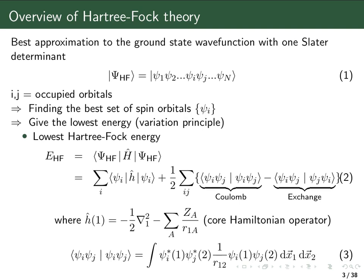The first integral has electron one described by spin orbital ψ_i and electron two described by spin orbital ψ_j — that we call a Coulomb integral. The second integral is where in the ket we have interchanged the two spin orbitals — that's called an exchange integral, because we have exchanged the two spin orbitals. This is a consequence of working with an anti-symmetrized product of spin orbitals, meaning working with the Slater determinant.